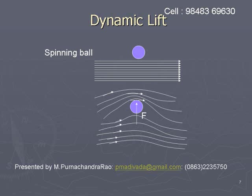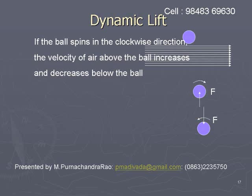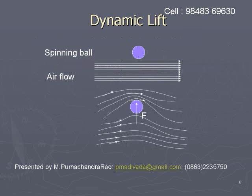Dynamic lift: when a spinning ball is placed in a horizontally flowing air, it rises up or falls down. We can explain this phenomenon using Bernoulli's principle. In the figure, the colored circle represents a spinning ball, and the horizontal parallel arrows represent the uniform flow of air.